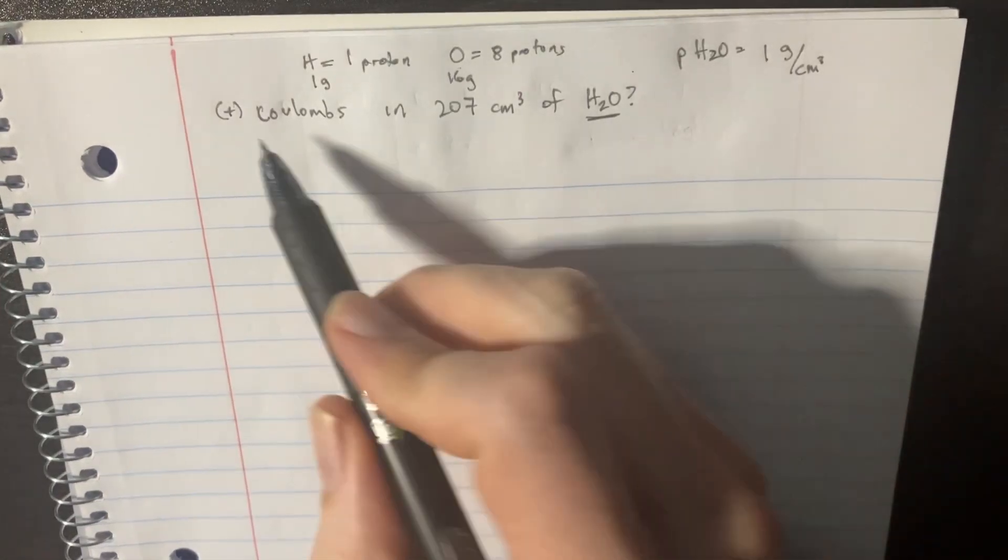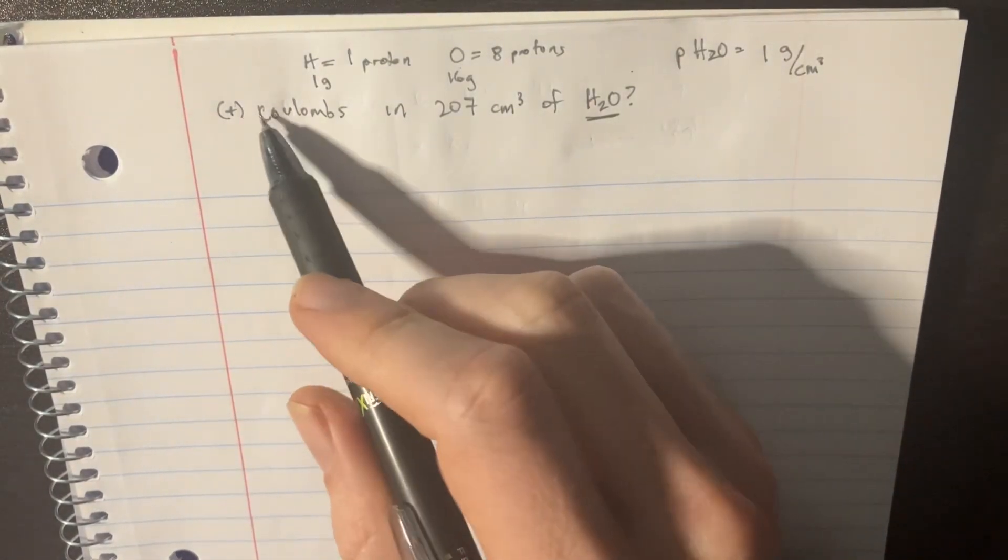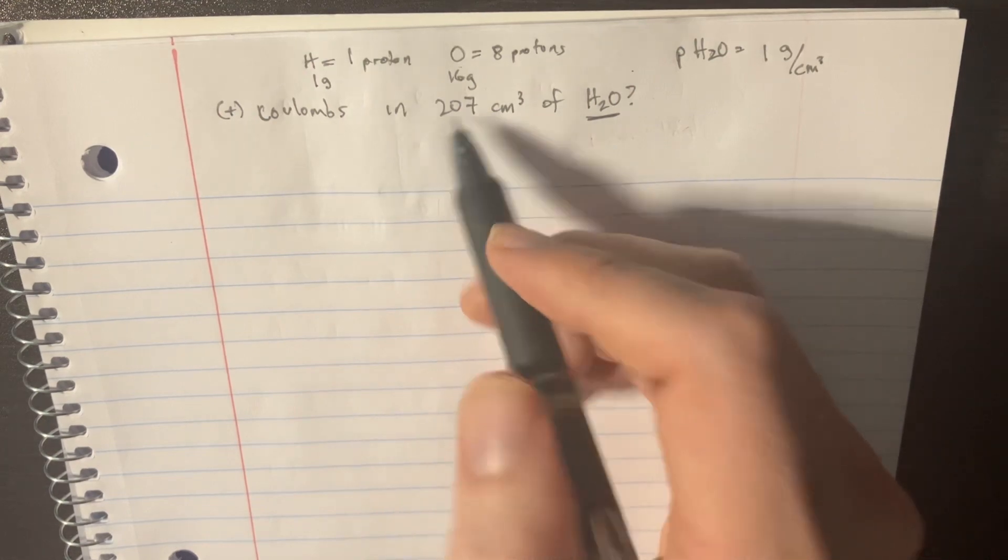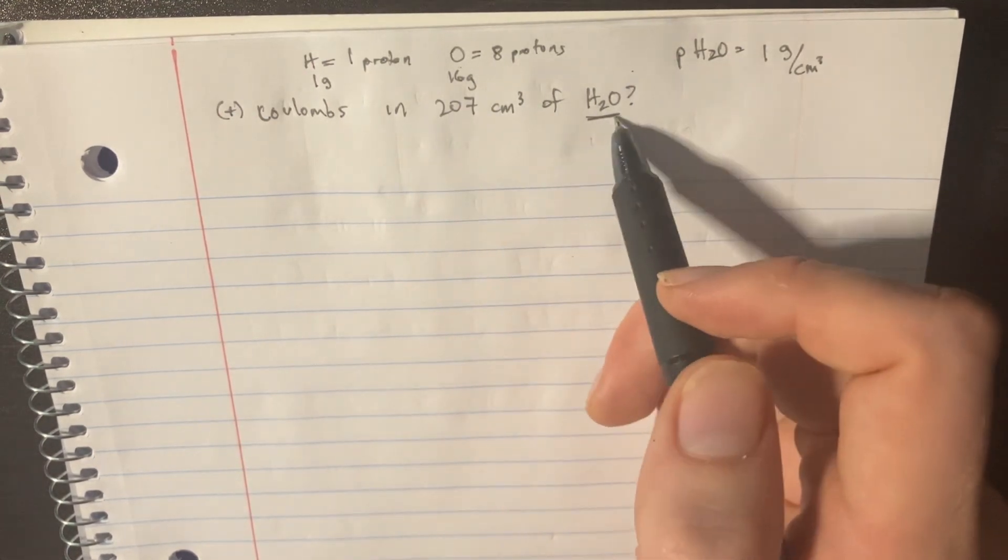This is a basic chemistry review. They're asking how many coulombs of electricity in 207 cubic centimeters of H2O.